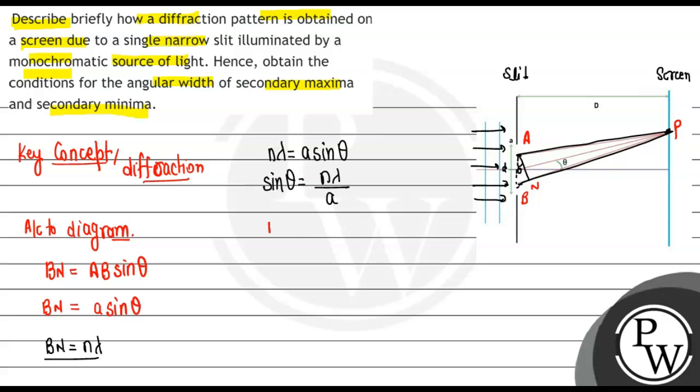Now we know that if theta is very small, we can write sin theta as theta, and we can also write tan theta is n lambda upon a.